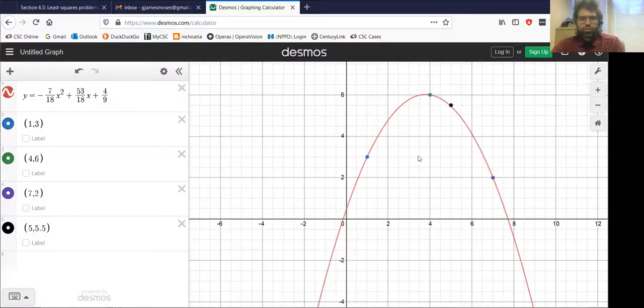It's true that there was no parabola that passes through all of these points. But this parabola comes quite close to passing through all of these points.